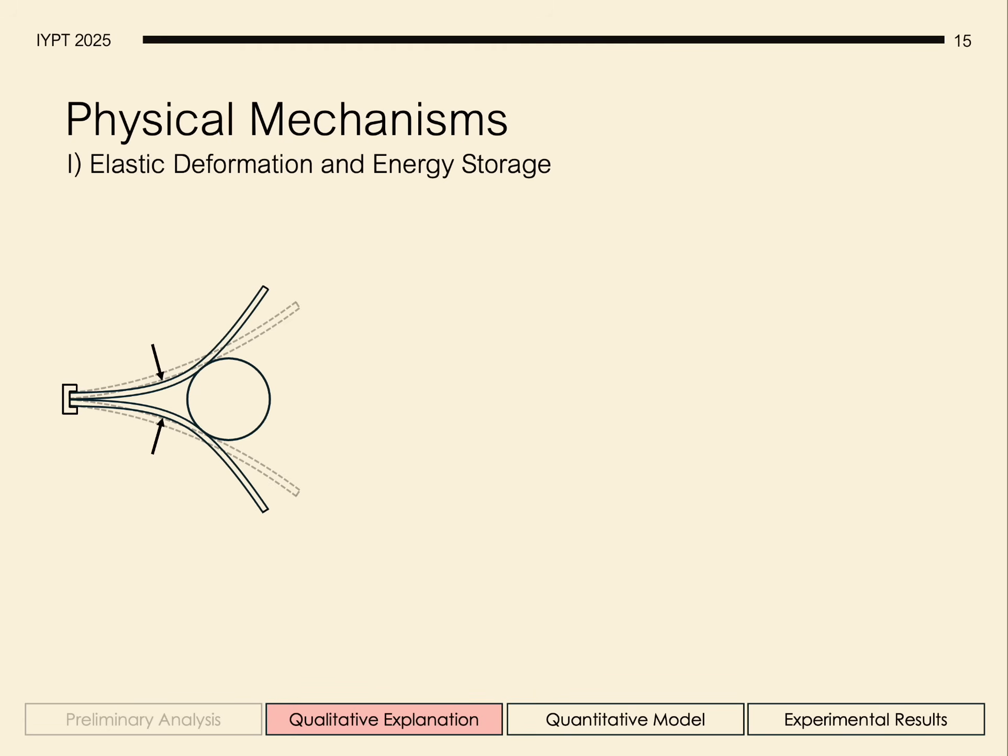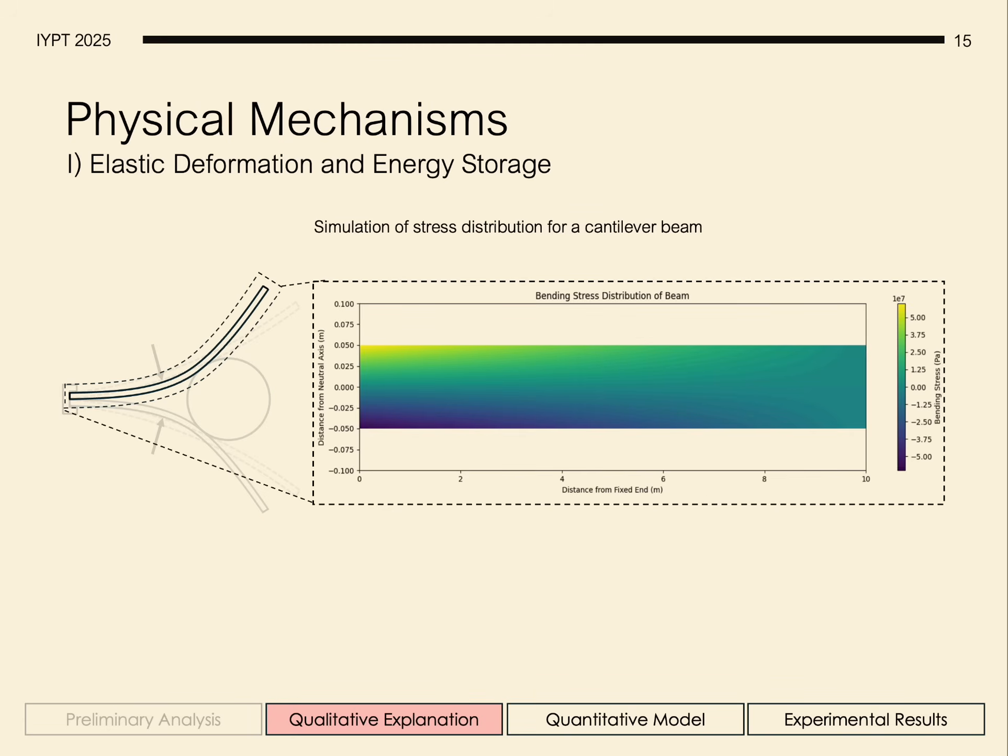Looking at our simulation for the stress distribution, we can see the pattern of internal stresses that are generated due to the deformation. More stress means more energy is stored. We can see this compression at the top, tension at the bottom, and neutrality along the neutral axis and towards the free end. And this neutrality is actually very critical and very crucial because there's little elastic potential energy stored there.